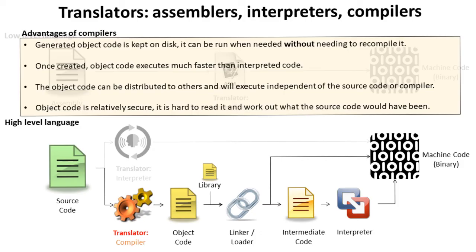With compilation, the generated object code is kept on disk. It can then be run when needed without needing to recompile the source code. Once created, this object code executes much faster than interpreted code — it's very efficient and it's already been optimised. This object code can also be distributed to others; it can be emailed, sent out, shipped on USB, DVDs, and downloads. It will execute independent of the source code, the tool that was used to write it, or any compiler. And to some extent, object code is relatively secure — we can give this to someone, but it's hard to read it and work out what the source code would have been.